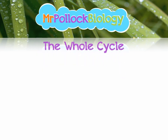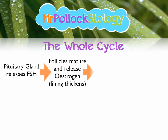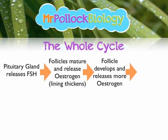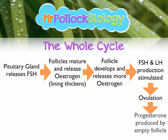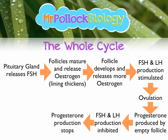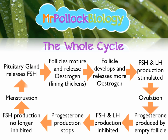Let's look at the whole cycle. FSH is produced by the pituitary, causing the follicle to mature and release oestrogen, which causes the uterus lining to thicken. The follicle develops and releases more oestrogen, stimulating FSH and LH production, which results in ovulation. Progesterone is then produced by the corpus luteum, and FSH and LH production are inhibited. Eventually progesterone production stops, FSH is no longer inhibited, allowing the cycle to restart after menstruation. Knowing the four hormones, their roles, where they're produced, and these interactions is what you need.